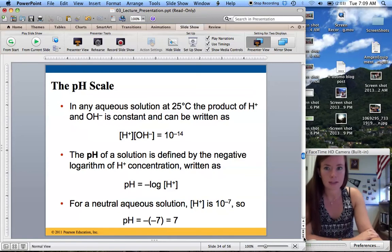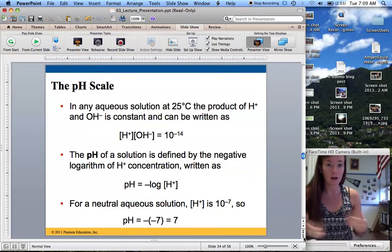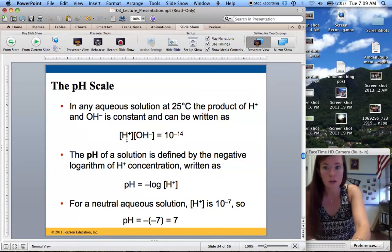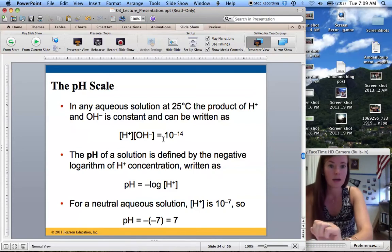The product of H+ and OH- is constant. So that means that if you multiply the concentration of the two, it'll always be the same. So that constant, we use these brackets to talk about concentration. So the concentration of H+ times the concentration of OH- will always be 10 to the negative 14th in any aqueous solution.